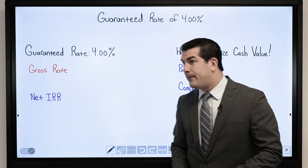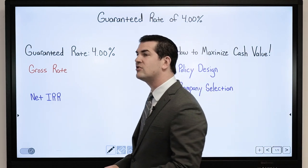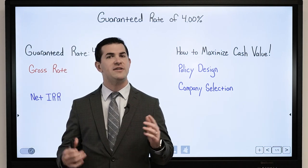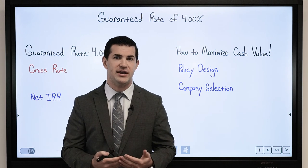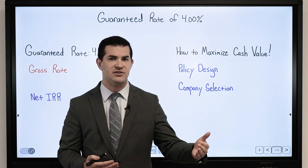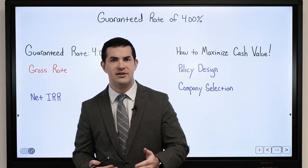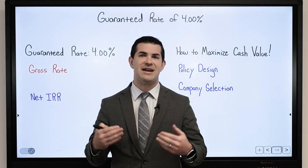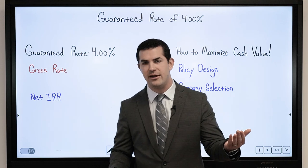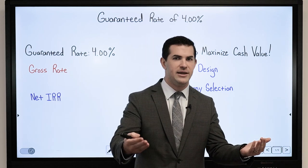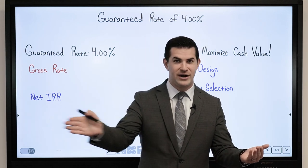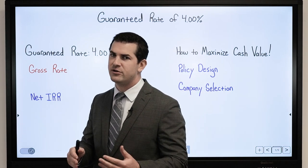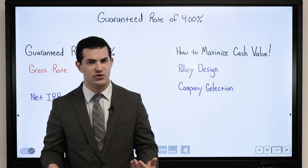The second element is company selection, and this is interesting. When you look at different insurance companies, you'll often see a guaranteed rate of 4% — very consistent with the majority of insurance companies out there. Yet if you take a policy designed in the exact same manner with company A and compare it to company B, then C and D, you will often see different net cash values — sometimes they'll be close, sometimes not close at all.